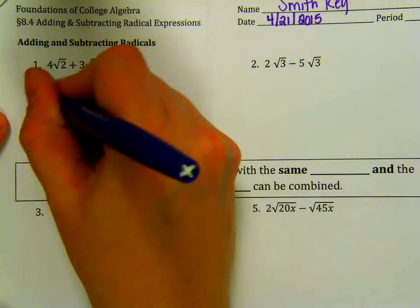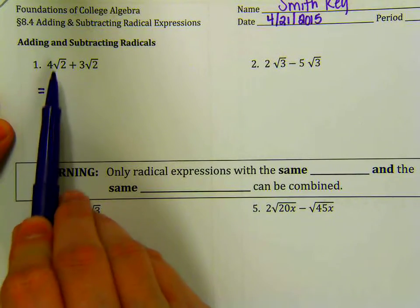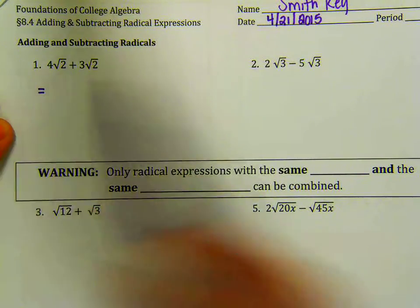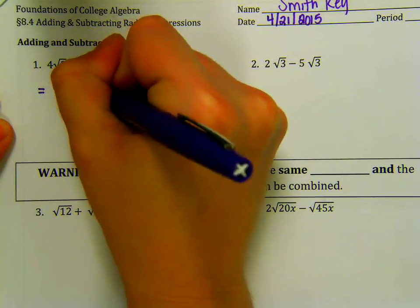For example, in number 1, 2 is the radicand in both cases. My index is also 2 in both cases, so just add 4 plus 3. What's 4 plus 3? 7. So 7, exactly, 7 root 2.